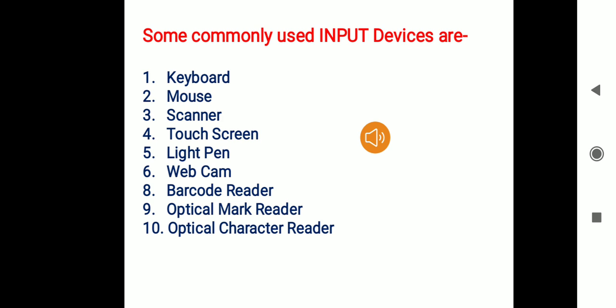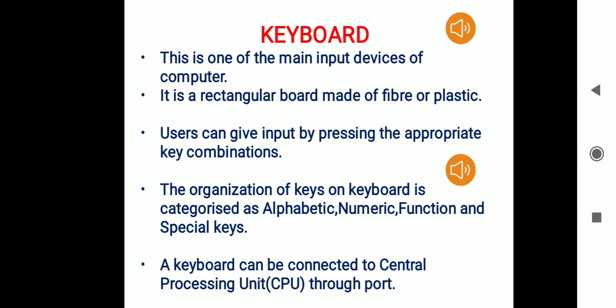Let's start with the keyboard. The keyboard is one of the main input devices of a computer. The shape of a keyboard is just like a rectangular board and it is made up of plastic material or fiber. Typically a keyboard consists of 102 keys. Nowadays keyboards have come with more number of keys — those are specialized types of keyboards available in the market. The user can give input by just pressing the appropriate keys or key combinations on the keyboard.